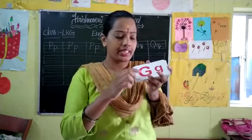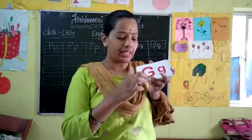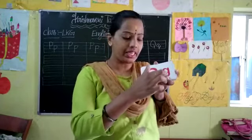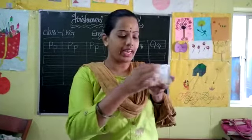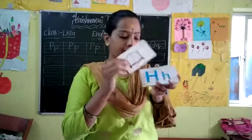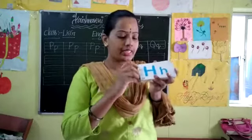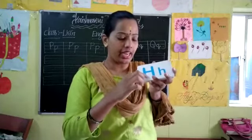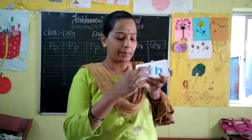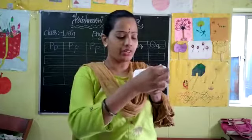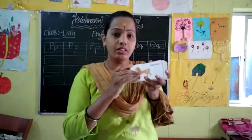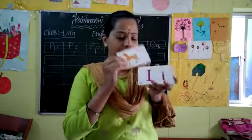And next letter is G. Capital G, small g. G for gate. And next letter is H. Capital H, small h. H for horse. H for horse.